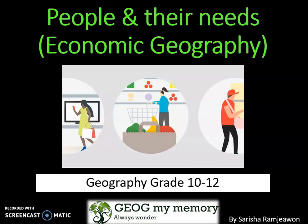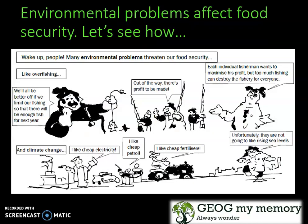Hi wanderers, welcome back to Jog My Memory. This video looks at people and their needs, more importantly looking at the economy and economic geography. This video is for Grade 10 to 12 geography. Environmental problems affect food security, as we know, so let us look at this cartoon below. Many environmental problems threaten our food security, such as overfishing and climate change.